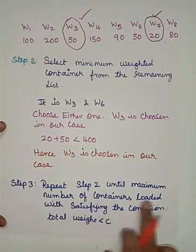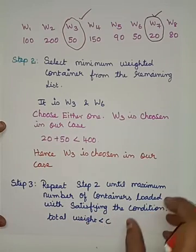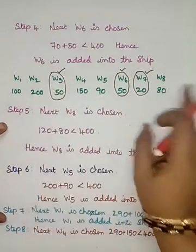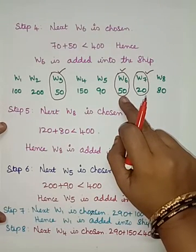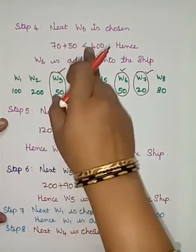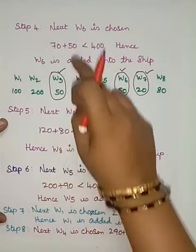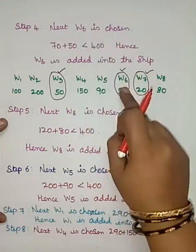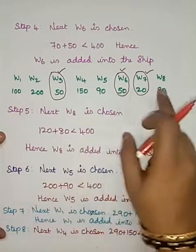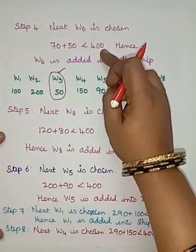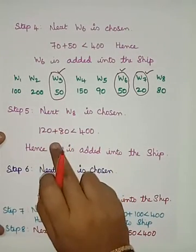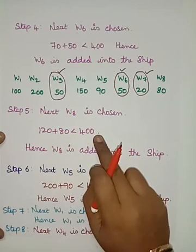Repeat this step until the maximum number of containers are loaded while satisfying the condition that total weight is less than C. Next, we choose w6: current weight is 70, plus 50 equals 120, which is less than 400, so w6 is loaded. Then we choose w8 with weight 80: 120 plus 80 equals 200, which is less than 400, so w8 is also loaded.